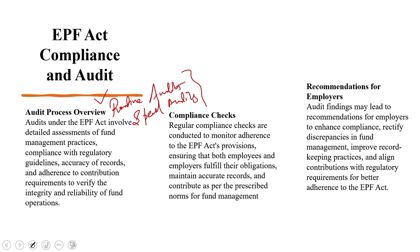Special audits are triggered by specific situations — such as a complaint lodged by employees, a suspicion of noncompliance, or a transfer of ownership within a business. Special audits involve a more in-depth examination where EPFO officials may extensively scrutinize employee records, financial transactions, and adherence to various EPF regulations. Typical compliance checks include registration and coverage, timely deduction and deposits, accurate record keeping, filing of returns, and the most important aspect — nomination and claim settlement.